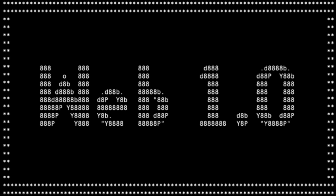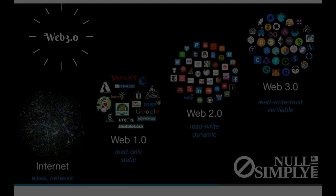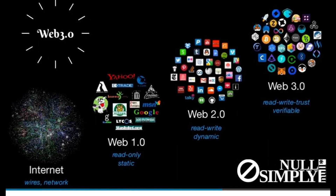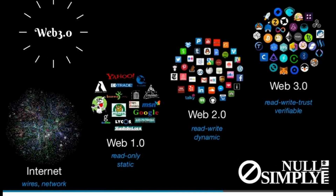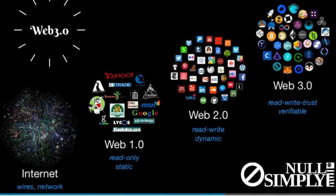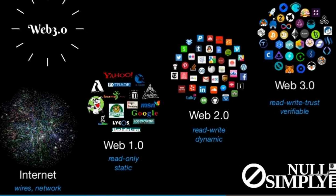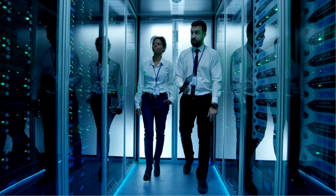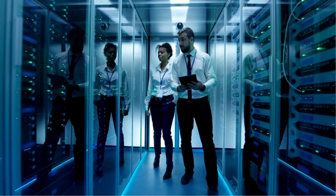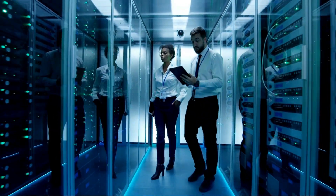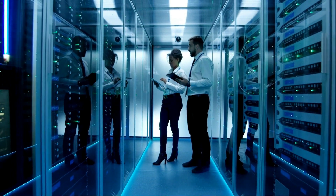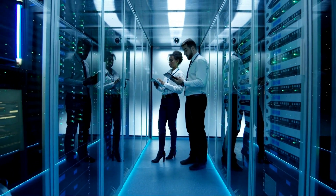Web 1.0 was the early internet that persisted until about the year 2000. At first, websites were just places you could read information posted on servers and interact with such servers in simple ways — mostly blogs and very static websites. There were search engines, and there were early e-commerce sites like Amazon and eBay.